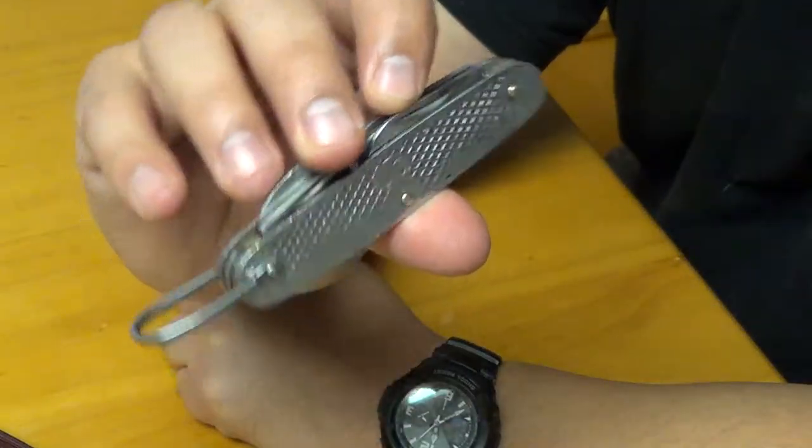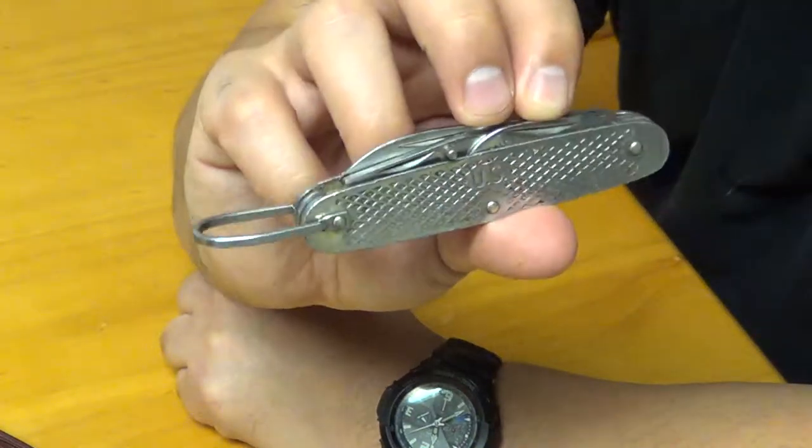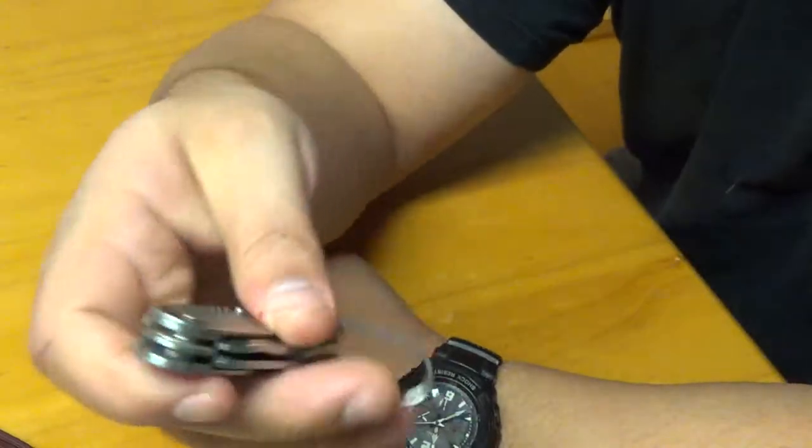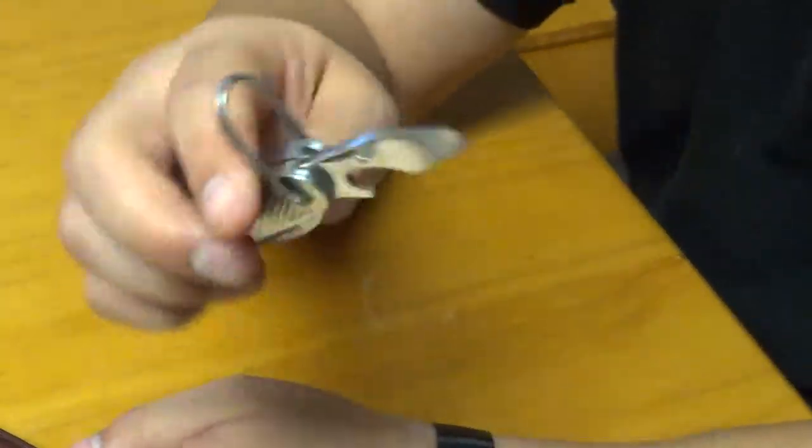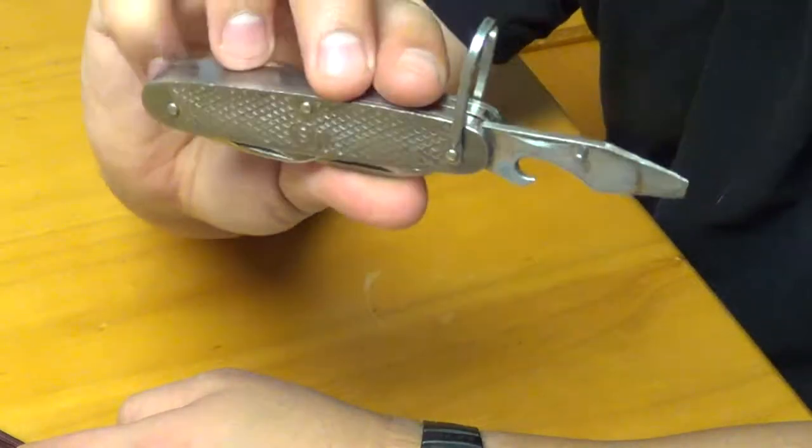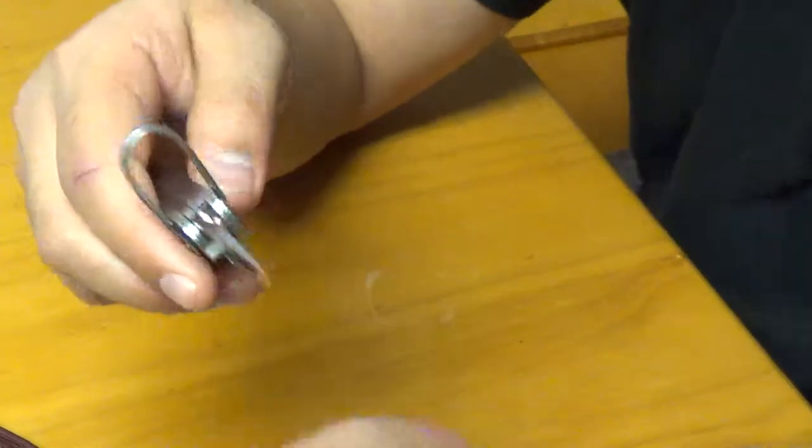And that nice thumb stud right there, which I told you was used for small arms and all that. But it works very good at deploying, you know, helping to deploy the screwdriver. Cause like I said, the tools on here are pretty stiff in there.